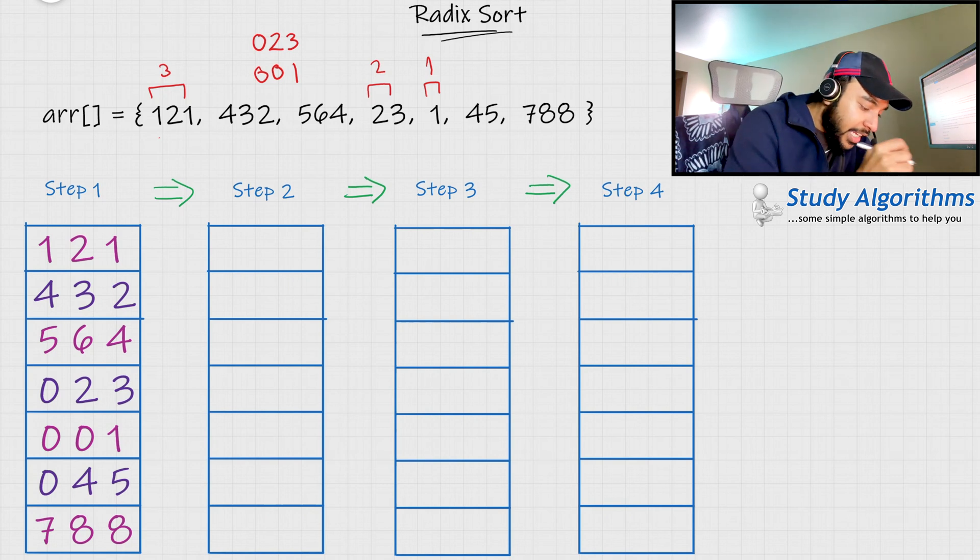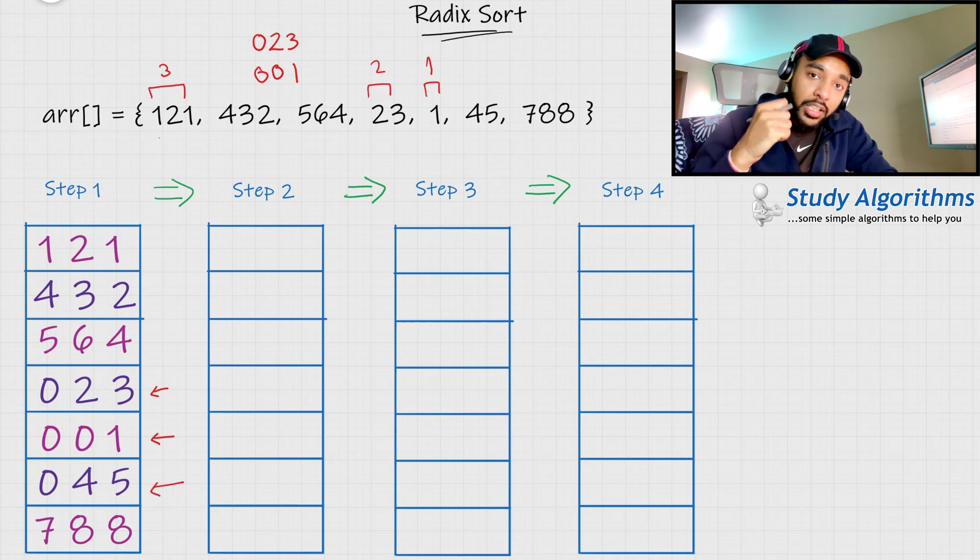So, in step 1, what we have just done is, we have converted all of these elements to same number of digits. So, you can see, 23 has been converted to 023, 1 has been converted to 001, and 45 has been converted to 045. So, how do you apply Radix sort on it? What does Radix mean?